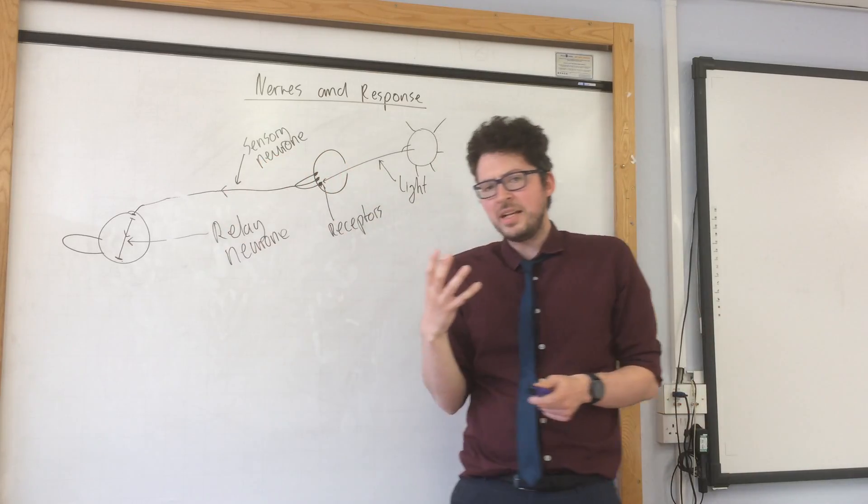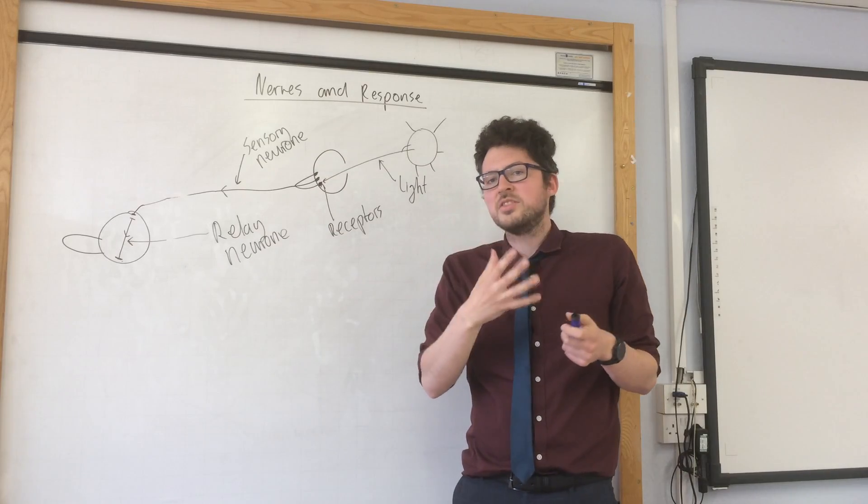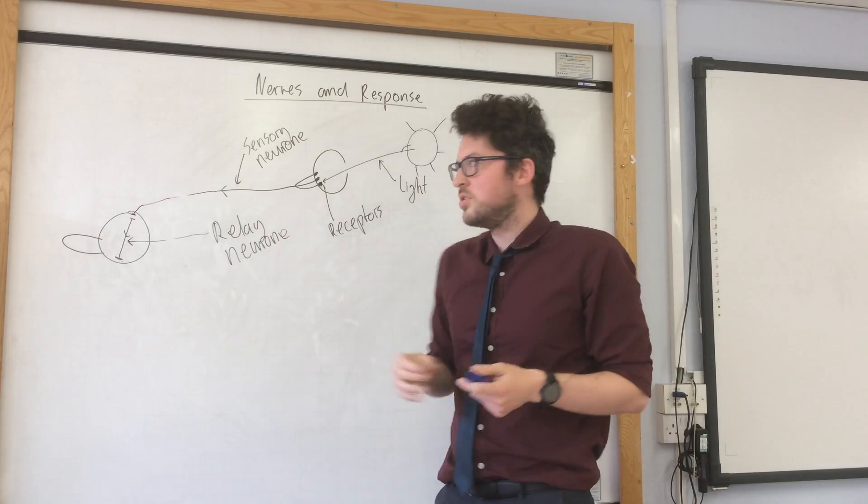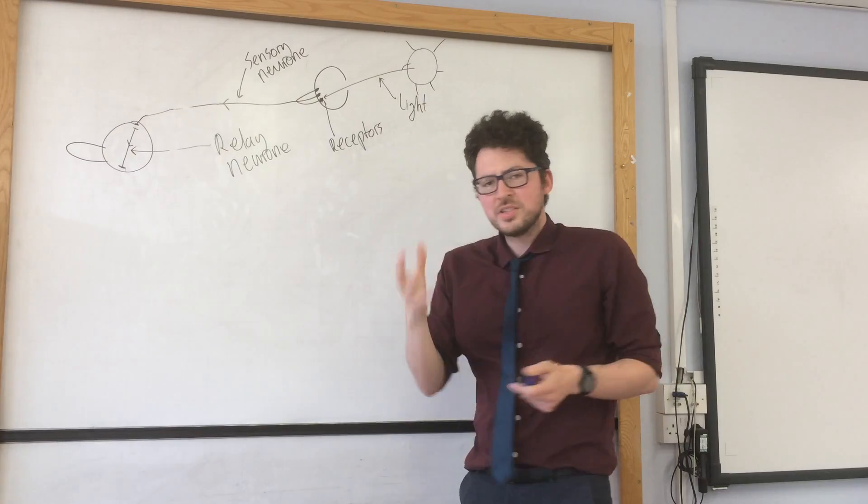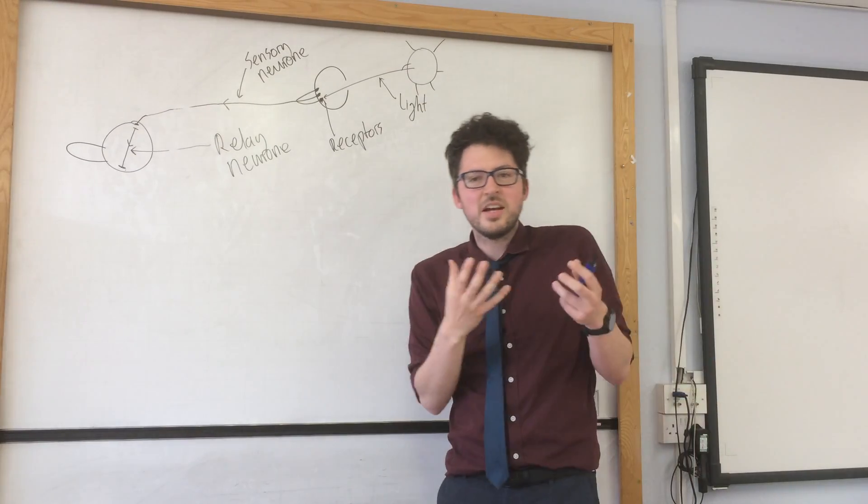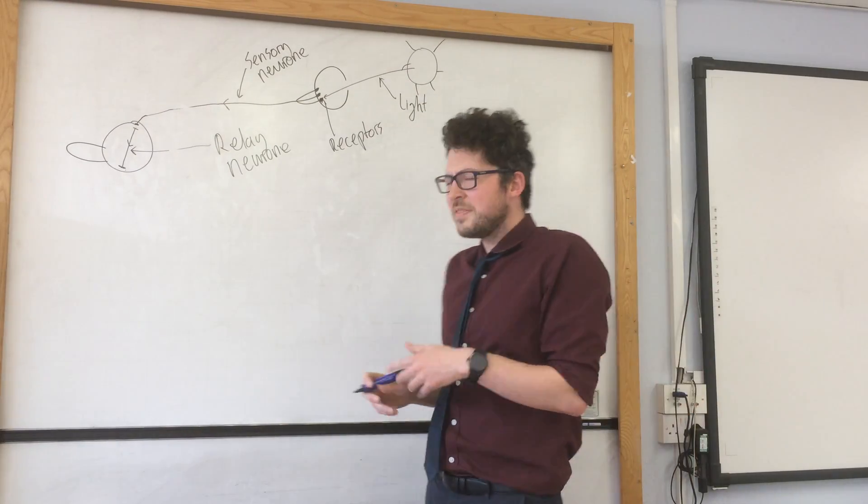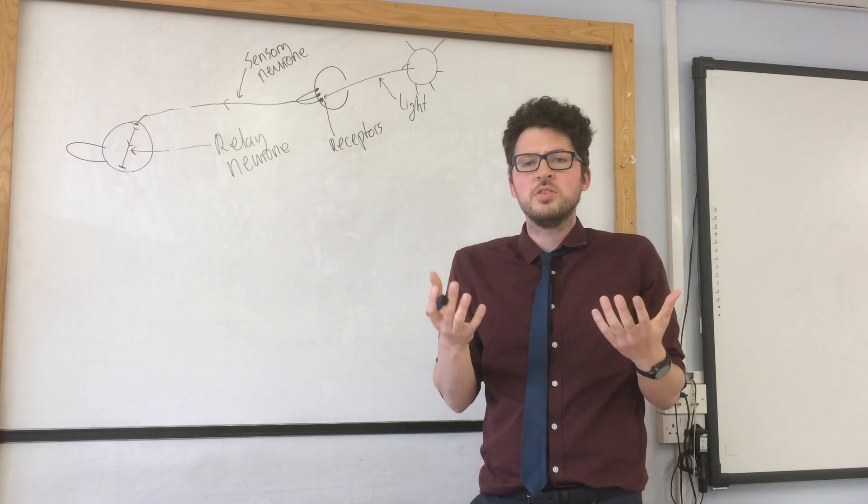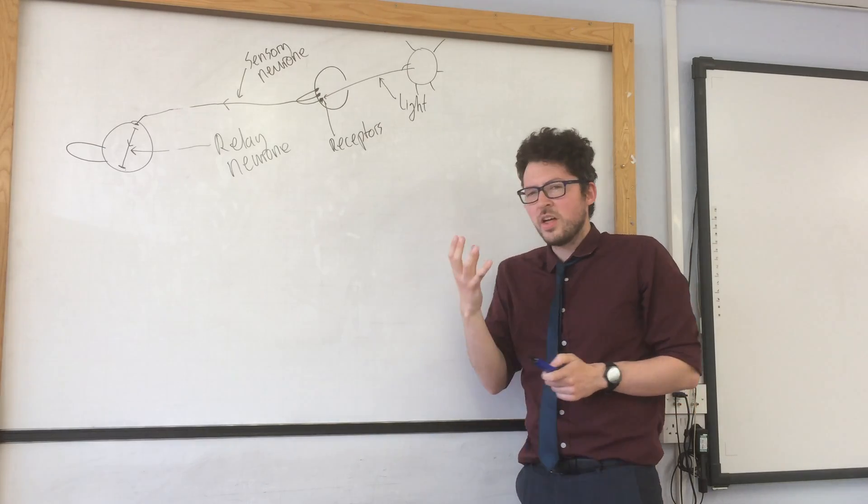So in the brain, we will make a decision. Our brain allows us to make a decision about what we are going to do next. So let's say in this example, I'm going to decide to put sunglasses on. Now we need a way of allowing that response to occur. So we need another neuron.